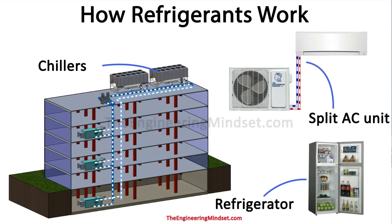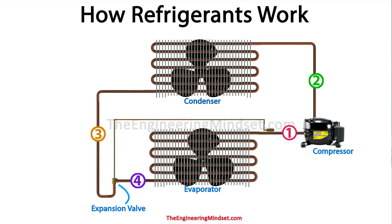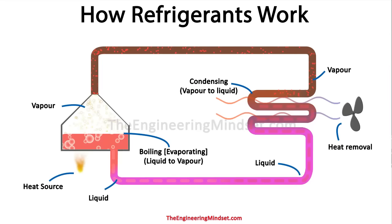It doesn't matter what type of system you look at — all the way from the refrigerator in your home to simple split units and even large industrial chillers — essentially they all work the same. That's because they pass the refrigerant between the main components: the evaporator, the compressor, the condenser, and the expansion device.